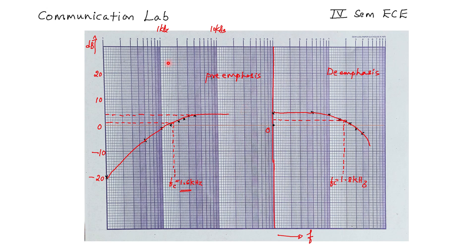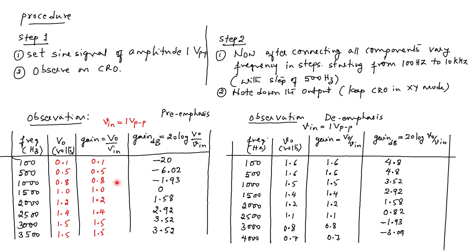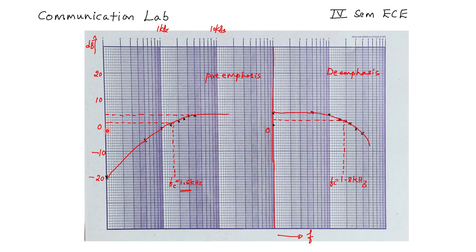Using a semi-log sheet we can plot the graph. On the left-hand side is the pre-emphasis graph and on the right-hand side is the de-emphasis graph. The x-axis represents frequency and the y-axis represents gain in decibels. Based on the results, the scale on the y-axis is set to 10 dB per cell. Each reading is plotted and a graph is drawn, with the minus 3 dB line cutting the graph at the cutoff point.